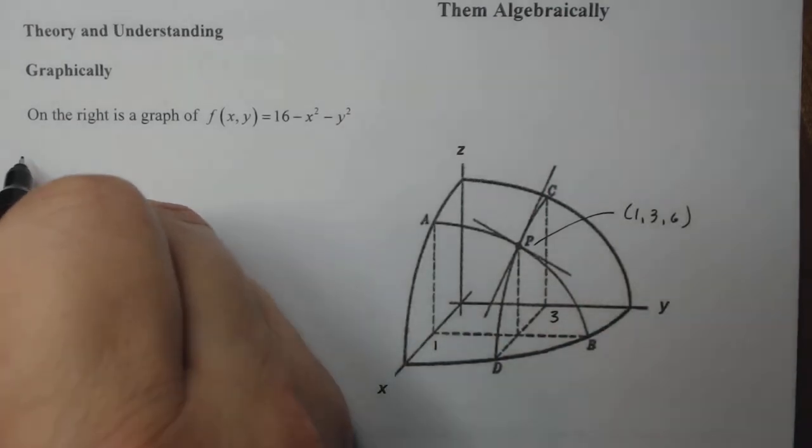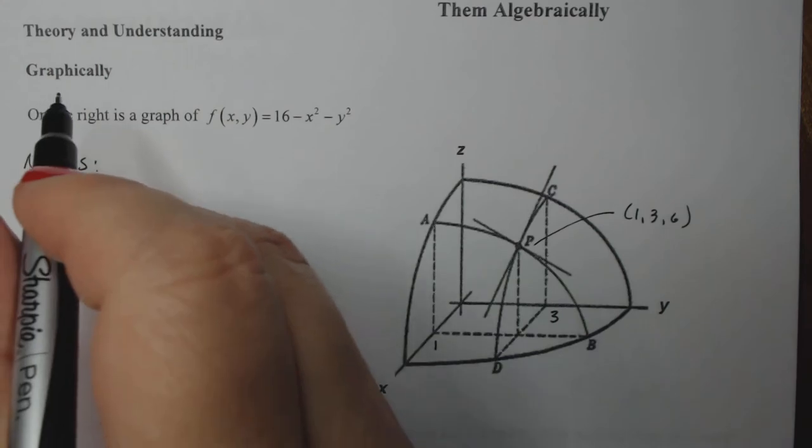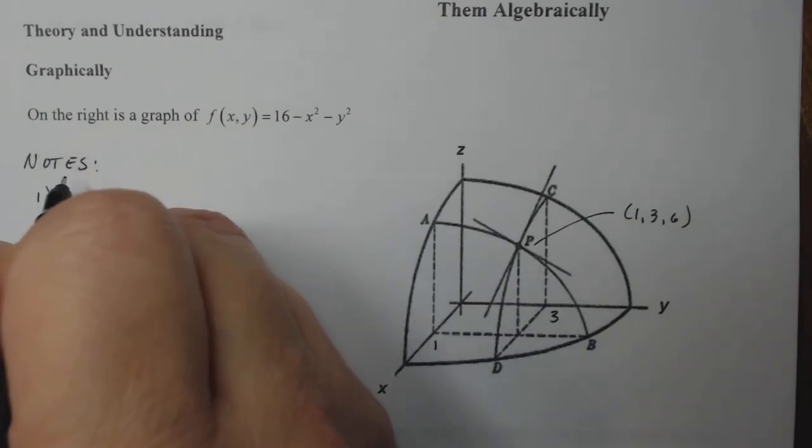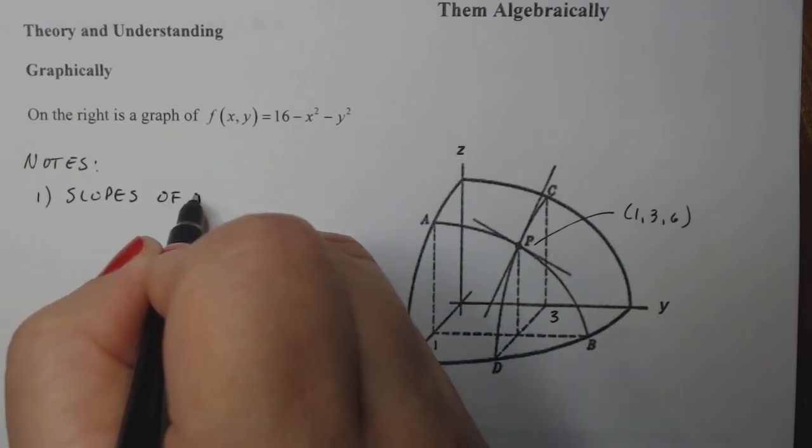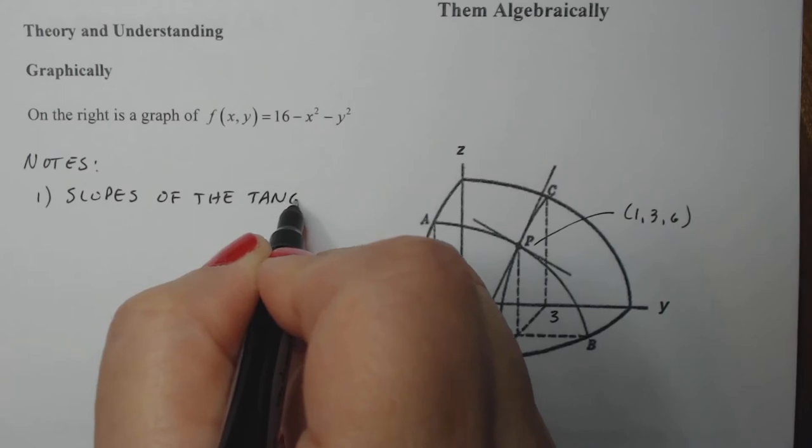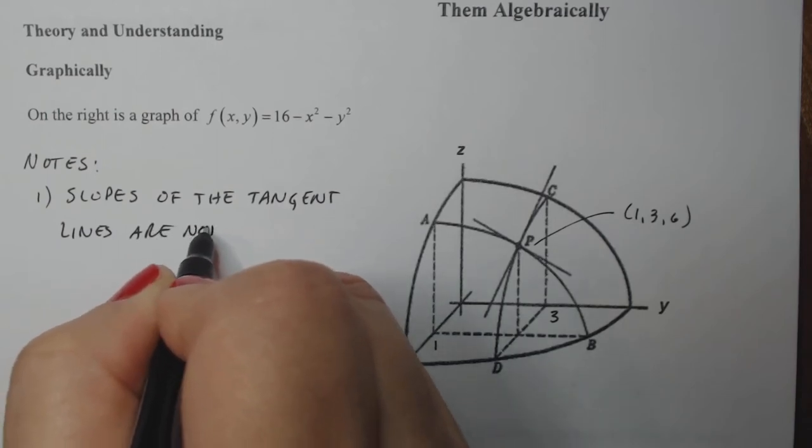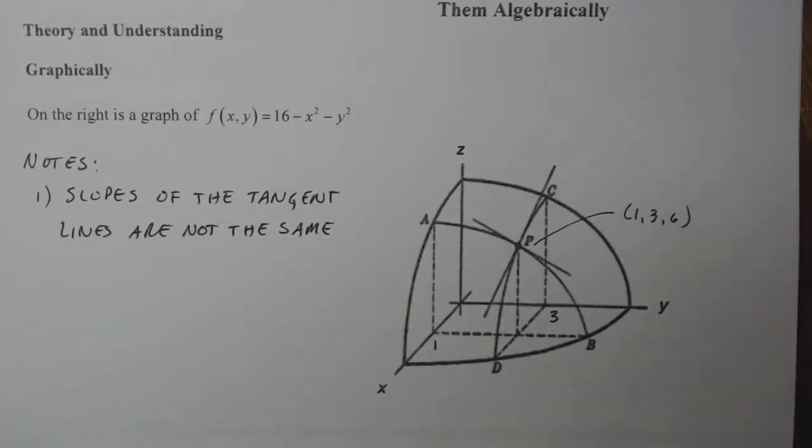Let me write down a couple notes here. Hopefully you had written notes of what I just said. If you didn't, go back and write down notes. So here's a couple other notes. Number one, the slopes of those tangent lines are not the same. That's very important to understand. You have to specify what direction you're looking in order to talk about the slope in that direction.